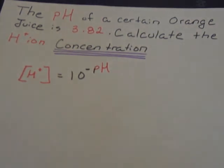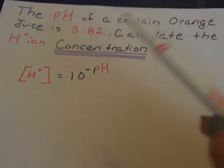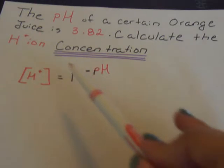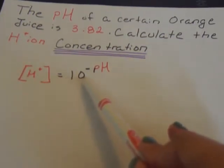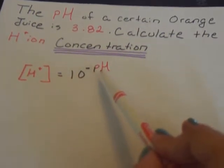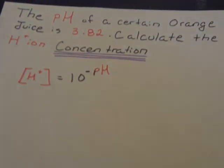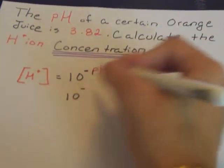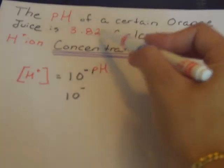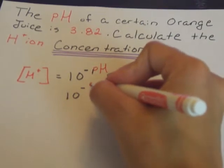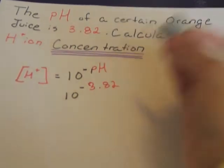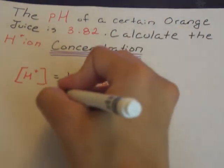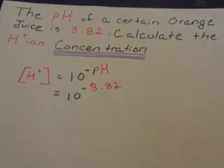So right now we are given the pH of the orange juice and we want to calculate the H ion concentration. The equation is telling us that the concentration of the H ion is equal to 10 to the negative pH that they're giving us. So I'm going to plug in the pH that they gave us which is 3.82 up here. And that will give us our concentration for the H ion.